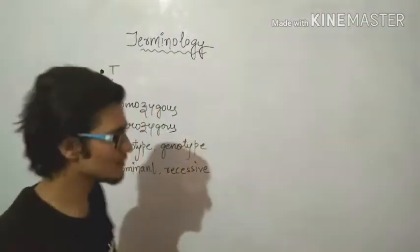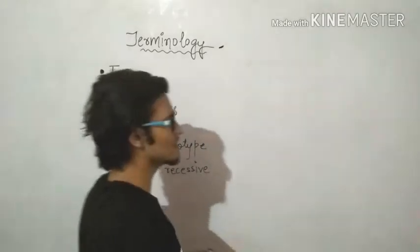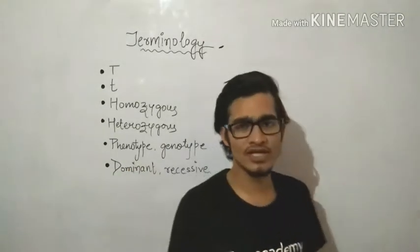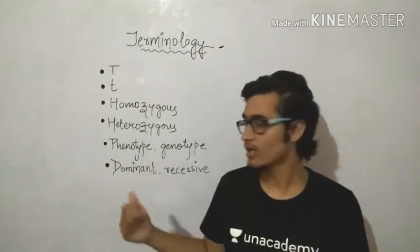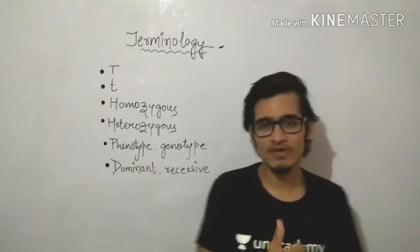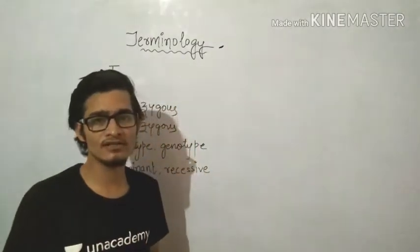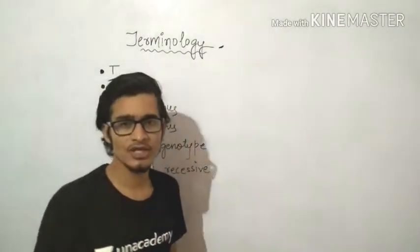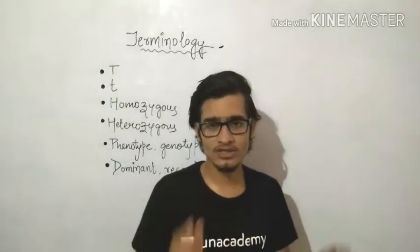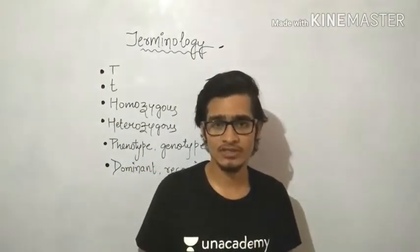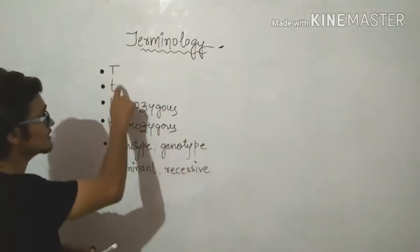Today we will talk about some terminology — some terms and symbols related to genetics. After this video, we are going to start different kinds of crosses. Before that, we have to understand some basic terms which will help us make all the crosses and Punnett squares very effectively.